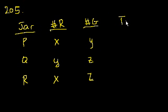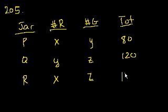And then they tell us the total. Total is 80, 120, and 160. And they say, in the table above, what is the number of green marbles in jars? So we need to solve for z.